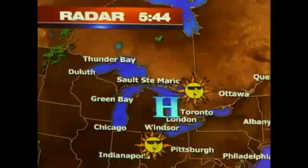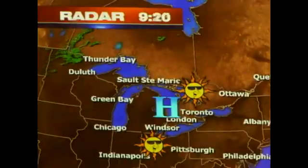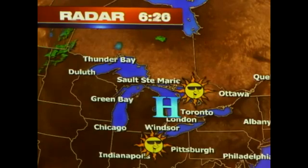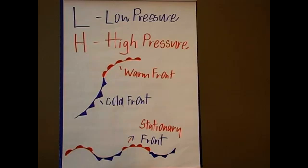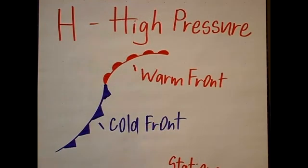A high-pressure system is the opposite of that. It's marked with an H on the maps, and it usually does indicate fair weather. Associated with a high and a low-pressure system, this is where the fronts come into play. A warm front moves in a way that it replaces the cooler air. A cold front is on the leading edge of a relatively colder air mass, and it separates these two air masses. So with a high or low-pressure system, you're usually going to have a warm and a cold front associated with it.